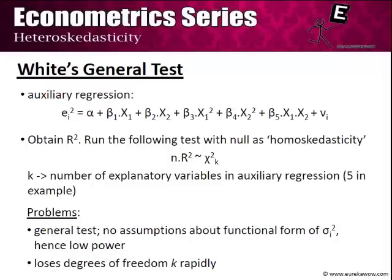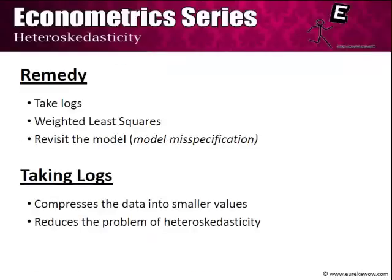White's general test, because it does not assume any particular functional form, suffers from certain problems. First, this test has low power. Second, it loses degrees of freedom very rapidly—as we increase the number of explanatory variables in the auxiliary regression, k goes up, making it more difficult to reject the null hypothesis that there is no heteroscedasticity.